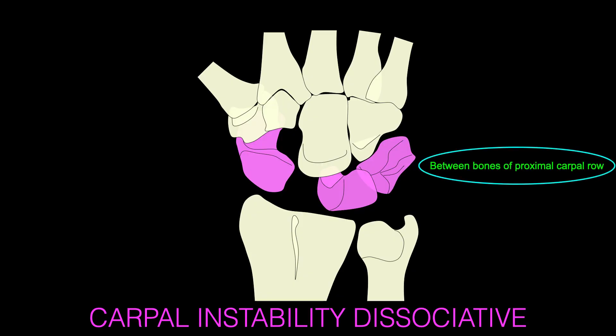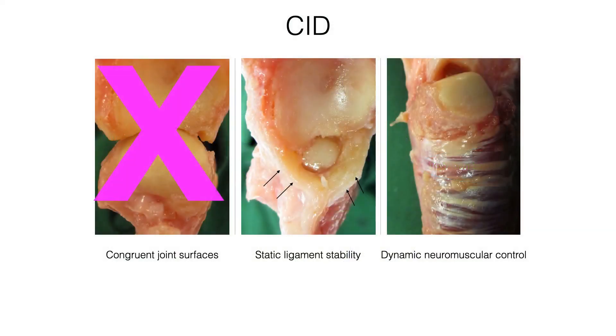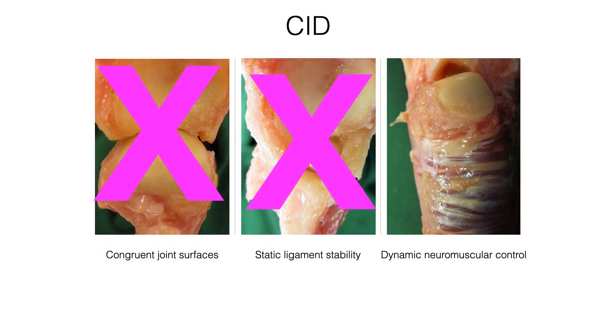Dissociative carpal instability, or CID, on the other hand, is an instability between the bones of the proximal carpal row, seen in scapholunate or lunotriquetral instabilities. In these instances, the joint surfaces are often incongruent and the static ligament stability has failed.